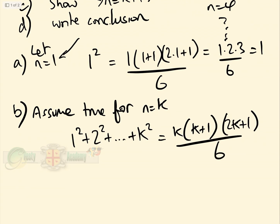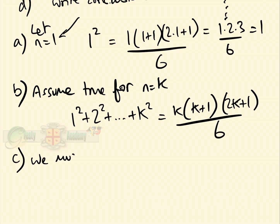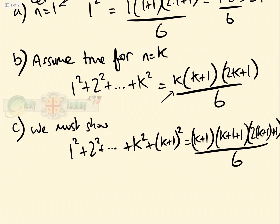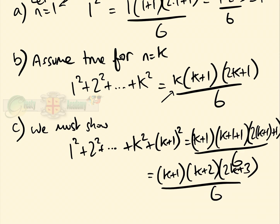Now for part C: assuming that is correct, we must show that it is true for k plus 1. So we must show that 1² + 2² + ... + k² + (k+1)² equals, replacing k by k+1 in the formula, (k+1)(k+2)(2k+3) over 6. We must show that this sum is equal to that, given that we are assuming the k case is true.